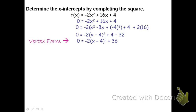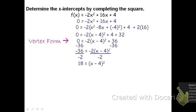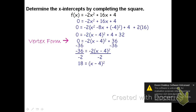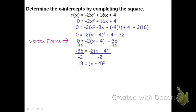Now to solve it, I'm going to move the 36. I'll subtract 36 from both sides, and I get -36 = -2(x - 4)². We'll then divide both sides by -2 to get the quantity (x - 4)² isolated, and we get 18 = (x - 4)². Now that the quantity is isolated, we'll undo the squaring by square rooting. If we square root both sides, we get ±√18 = x - 4.